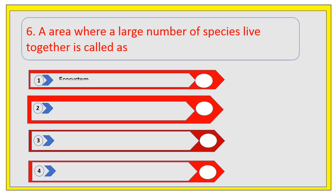An area where a large number of species live together is called. Options are ecosystem, biome, biosphere, and niche. The right answer is biome.